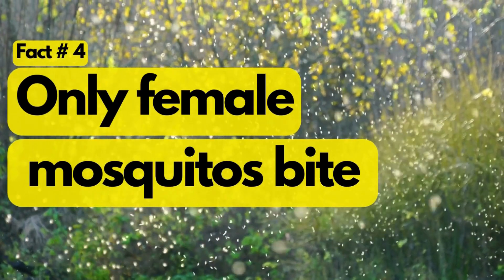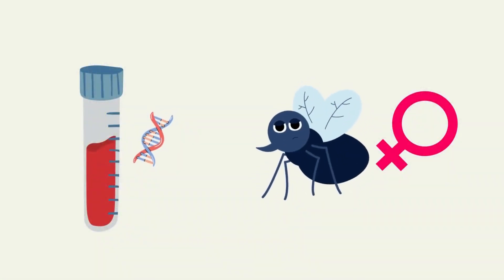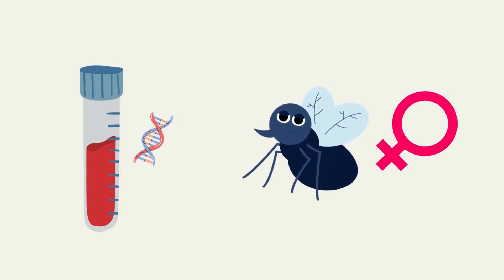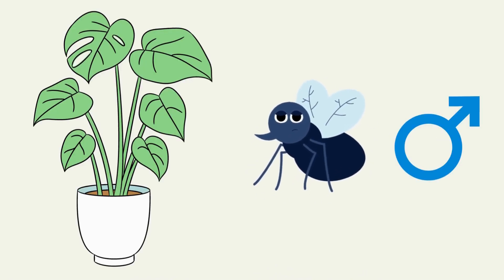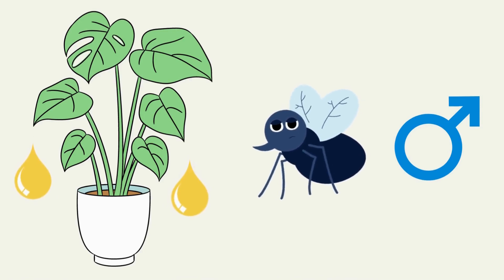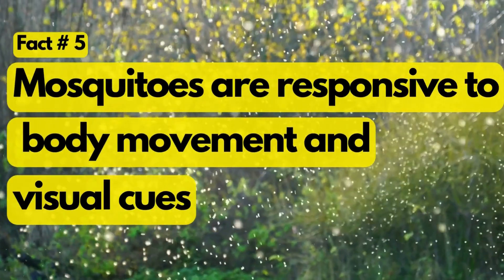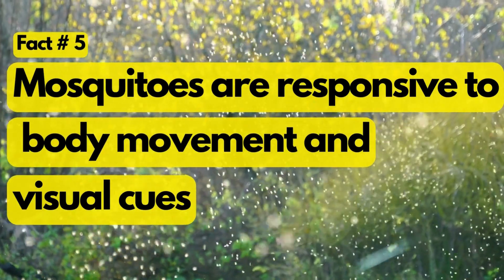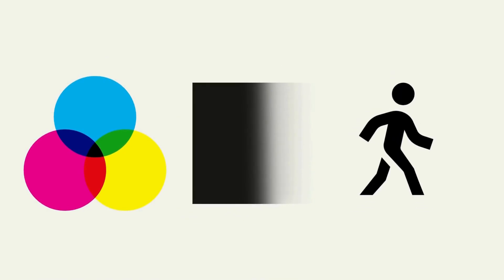Only female mosquitoes bite. The reason is that they require the proteins found in blood to produce and develop their eggs. Male mosquitoes, on the other hand, feed solely on plant juices and nectar. Mosquitoes are also responsive to body movement and visual cues — they are attracted to contrasting colors, dark silhouettes, and movement, which helps them locate potential hosts.